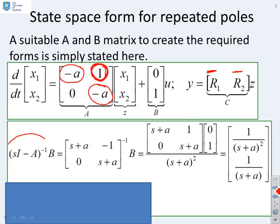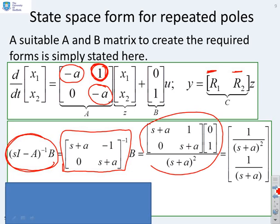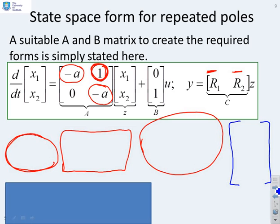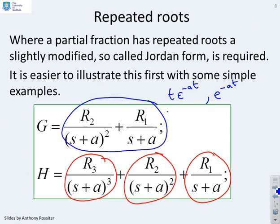Now, if I write down the Laplace transform expansion of this state space model, I'm using this formula here, SI minus A inverse times B. So SI minus A gives you this matrix here, or SI minus A inverse. I'm not going to do that slowly. You can do that yourself if you want. So I've just given you the result, and the result is given here. Now, if I multiply that out by multiplying by the B matrix, you'll notice you get an interesting result. The interesting result is you've got a 1 over s plus a squared in the top row, and a 1 over s plus a in the bottom row.